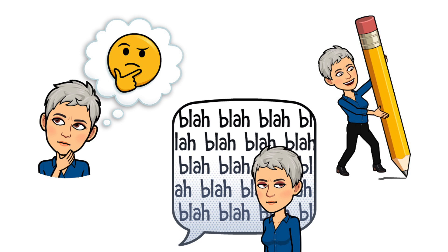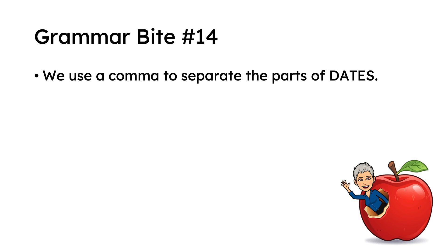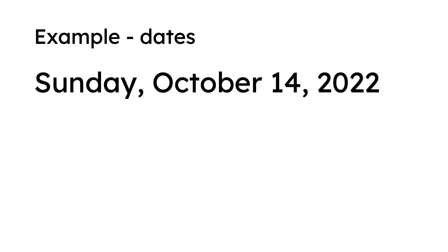And then today, I'm going to show you one thing that gets separated with a comma. And then next time, I'll tell you more. We use a comma to separate the parts of dates. Here's an example. Read it with me. Sunday, October 14th, 2022.